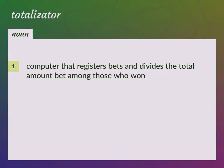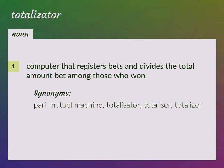A computer that registers bets and divides the total amount bet among those who won. Also known as a Pari Mutual Machine, Totalisator, or Totalizer.